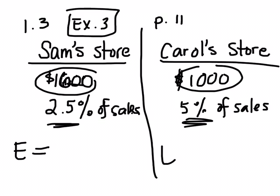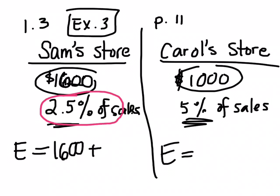We're calculating the person's earnings. So earnings is equal to what for Sam's store? $1,600 plus. How would you represent 2.5% of something?